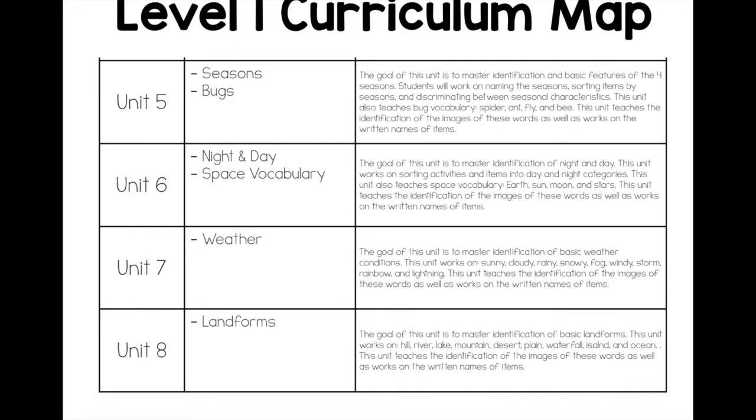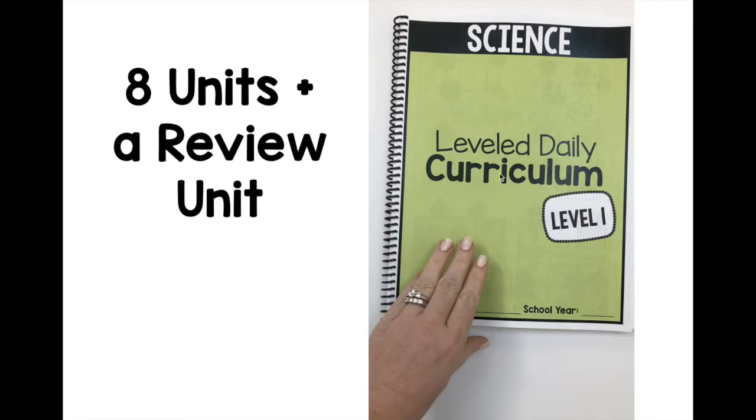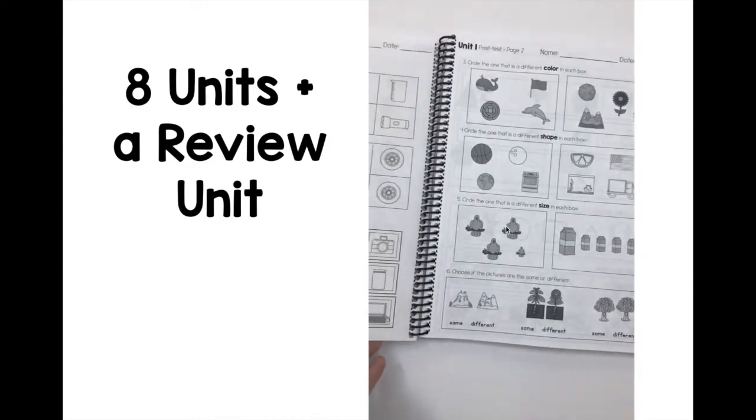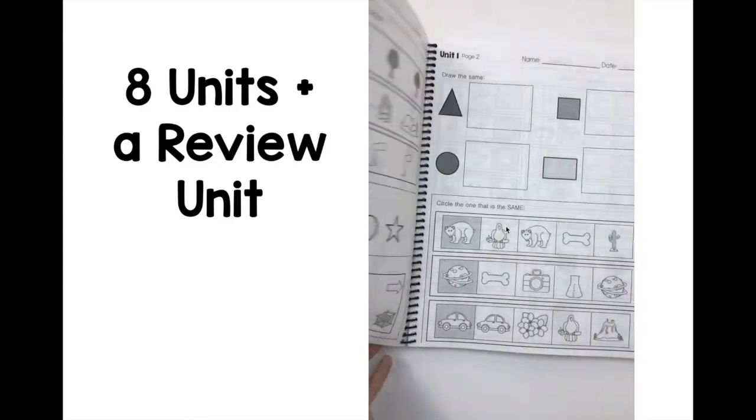Unit eight is landforms—some basic landforms, not getting too advanced yet, but still incorporating different ideas like hill and river, mountain, desert, things like that. There are eight different units and a review unit. I went ahead and bound mine with the cover; these covers are included.